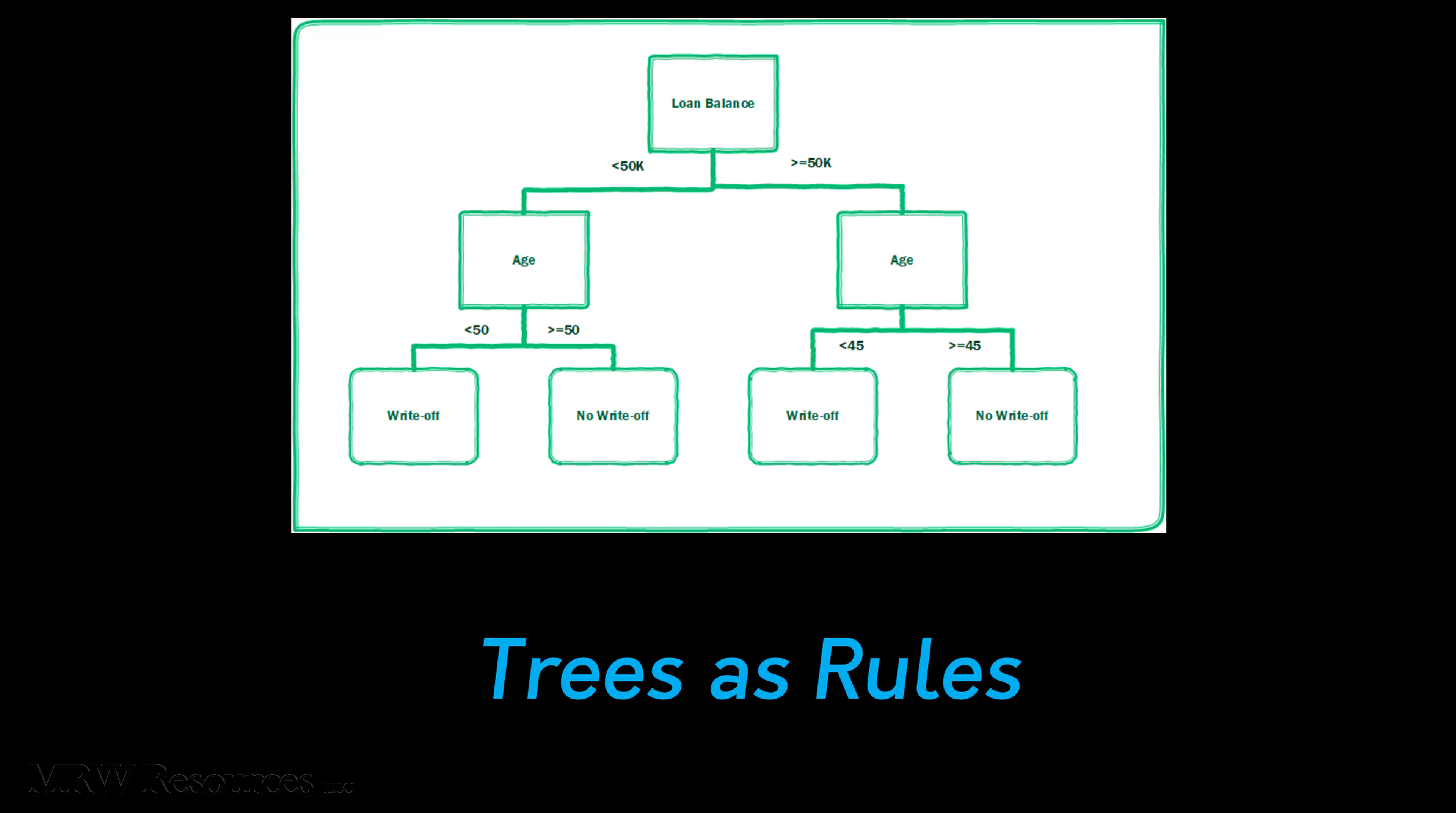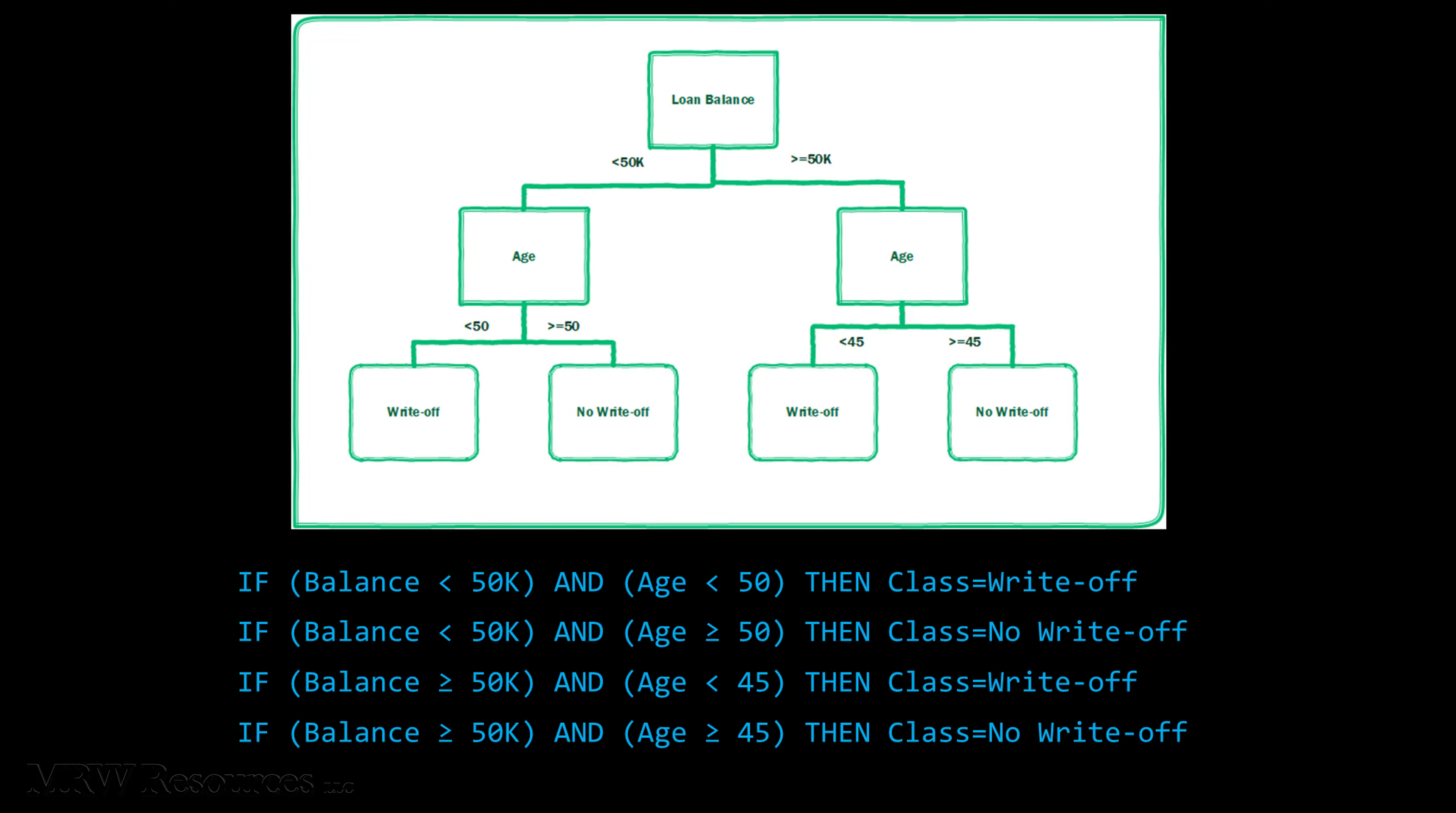So, for example, I can say if the loan balance is less than $50,000 and age is also less than 50, then I'm going to predict the class is going to be a write-off. If the balance is less than $50,000 and the age is greater than 50, then I predict that I won't have a write-off, and so on down the line.